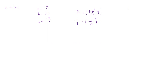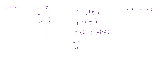Now we have to find the LCD. The LCD is just going to be four times 15, which gives us 60. Converting, we have negative one over four times 15 over 15, plus negative one over 15 times four over four. That gives us negative 15 over 60 plus negative four over 60. Negative 15 plus negative four is negative 19 over 60. This can't be reduced, so that's our final answer.